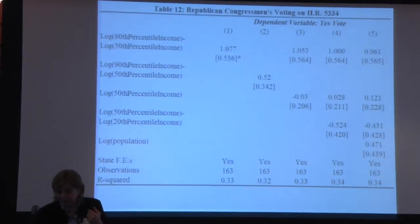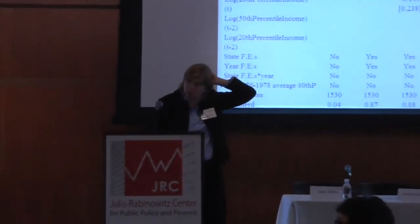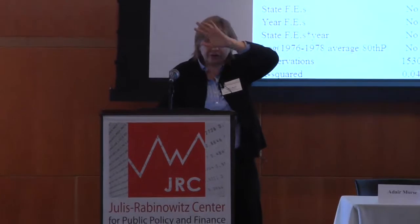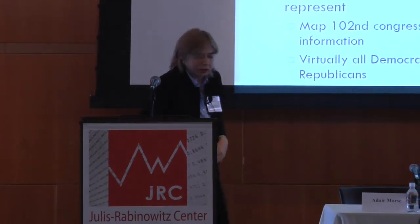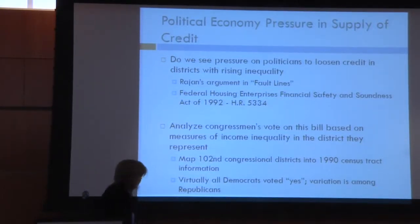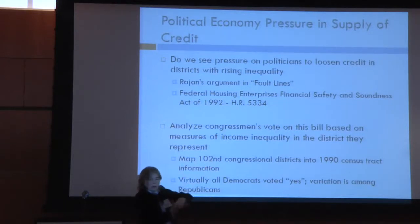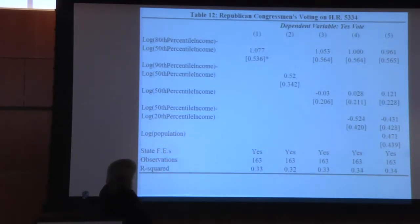Finally, we look at the Fannie and Freddie bill that opened up credit. We mapped Congressional House districts onto census tracts to get inequality measures, and looked at the relationship between income inequality in the districts and the voting among Republicans — Democrats voted pretty much all one way. We find a significant relationship there as well, though it gets a bit weaker.